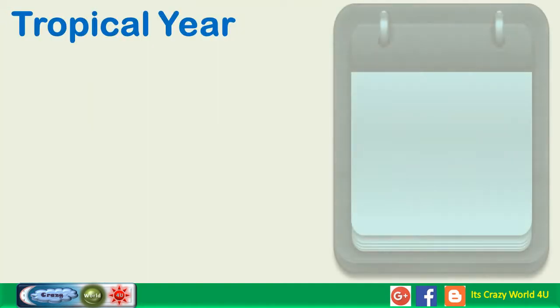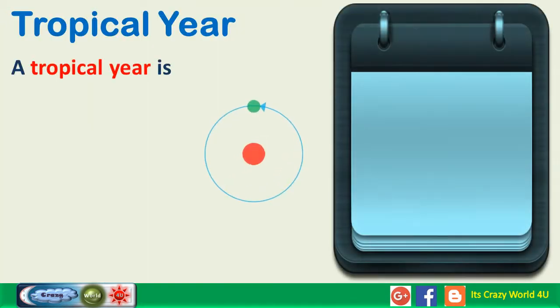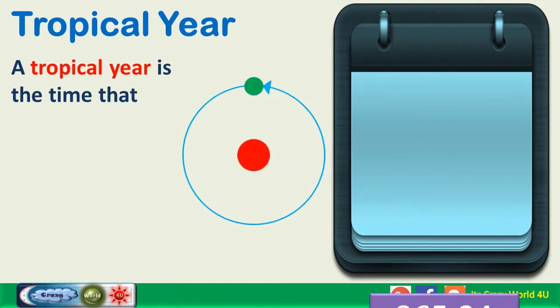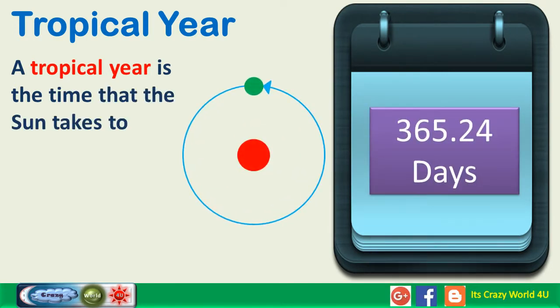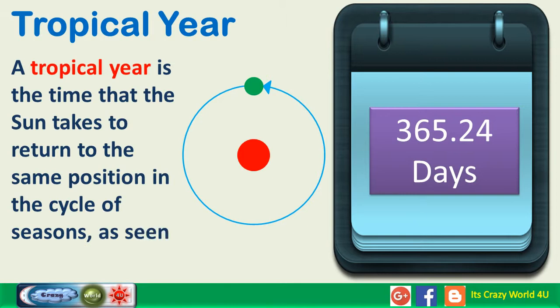Tropical Year. A tropical year is the time that the sun takes to return to the same position in the cycle of seasons, as seen from Earth.